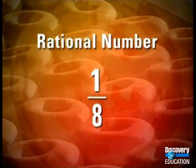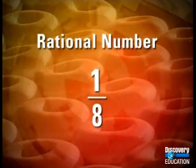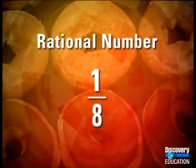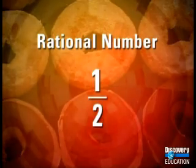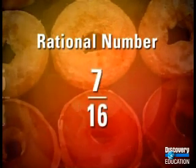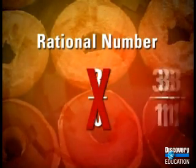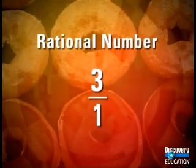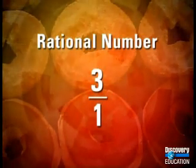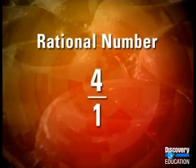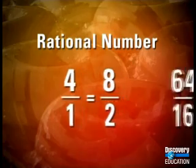A rational number is any number that can be expressed as a ratio of integers — a fraction in which the numerator and denominator are both integers. For example, one half is a rational number, so is two thirds, five eighths, seven sixteenths. But the denominator can never be zero. You can also say that any integer is a rational number because you can think of it as a ratio of integers — itself over one. Four can be written as four over one, or as eight over two, or even as sixty-four over sixteen. There are an infinite number of ways to write any rational number.